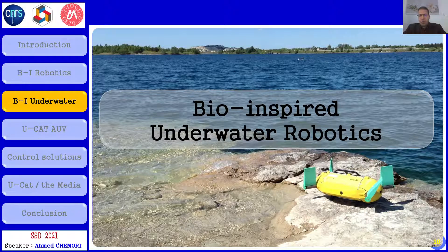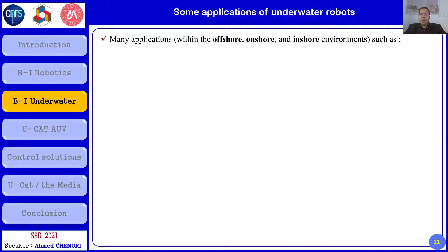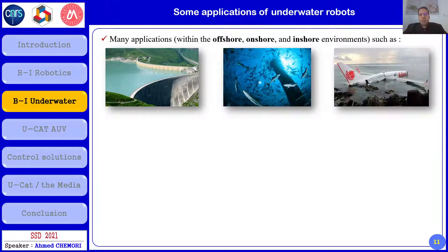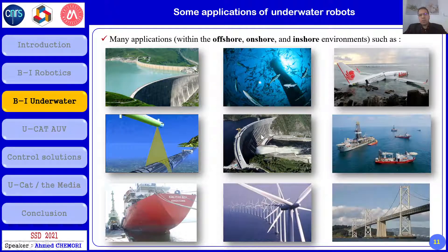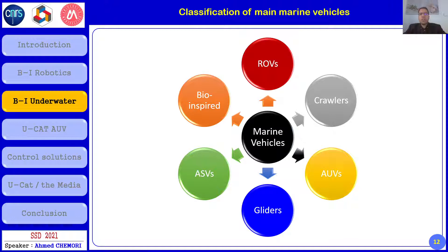Let me introduce bio-inspired underwater robotics. First, some applications of underwater robotics in general: the idea is to design underwater vehicles for different applications in offshore, onshore, or inshore environments. Applications include dam inspection, fish farms, air crash investigations, pipeline inspections, power station inspection, and inspection of facilities like ship hulls, wind parks, or bridges.